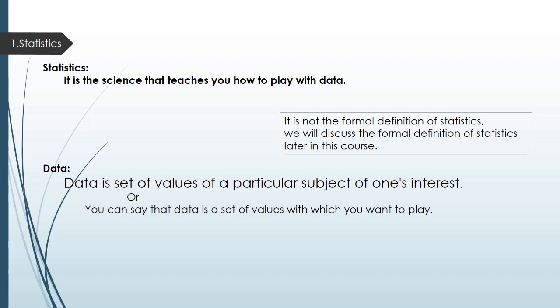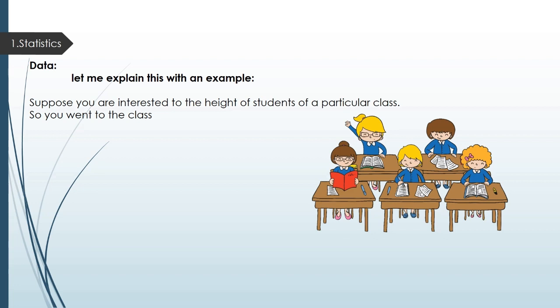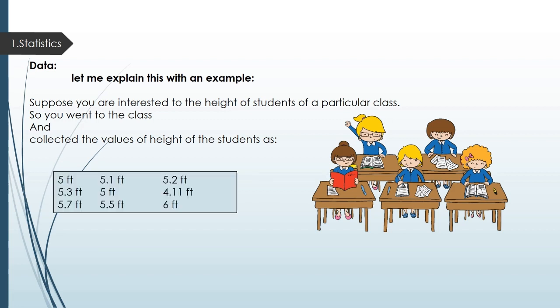Let me explain this with an example. Suppose you are interested in the height of students of a particular class. So you went to the class and collected the values of height of the students as: 5 feet, 5.1 feet, 5.2 feet, 5.3 feet, 6 feet, and so on. These are the values of height.